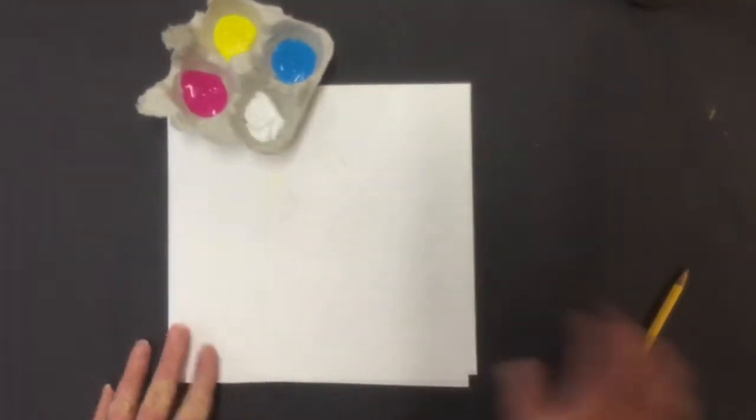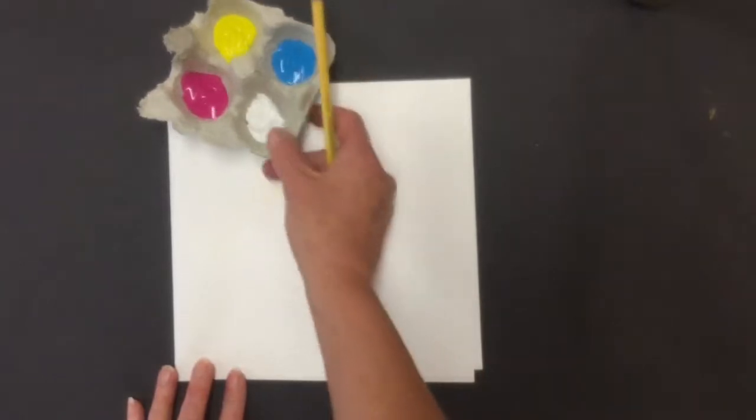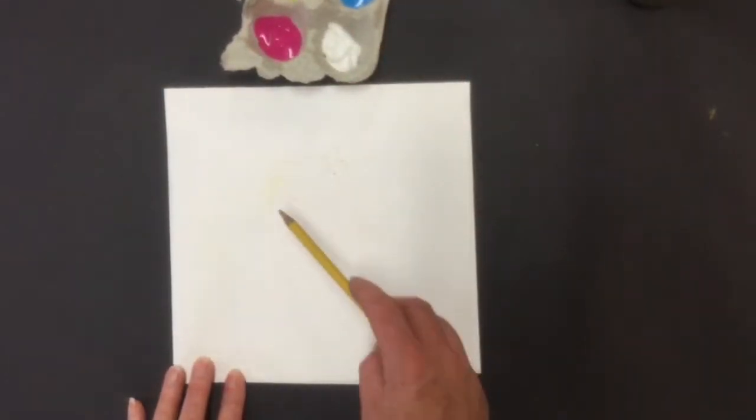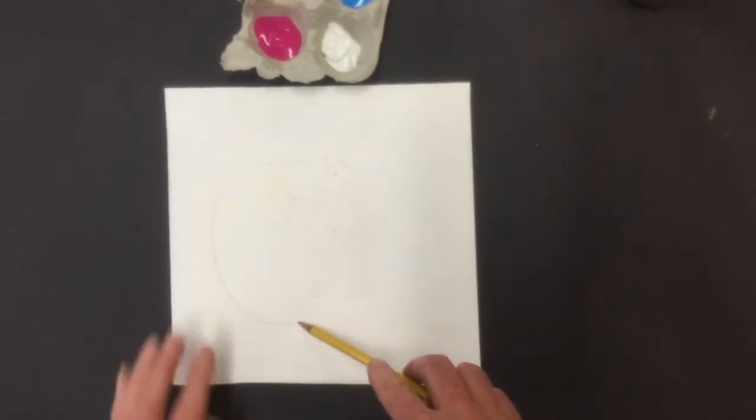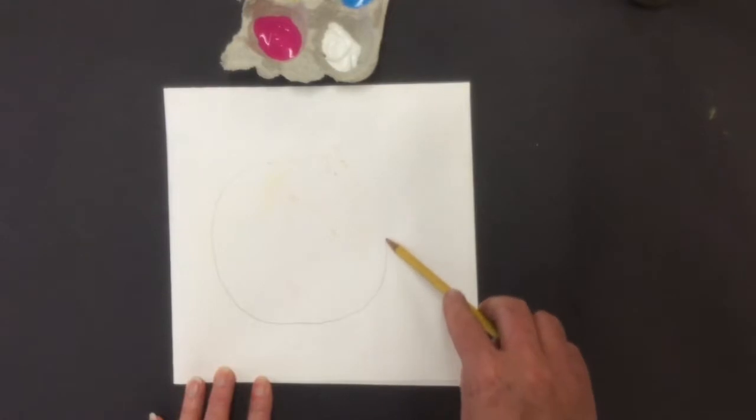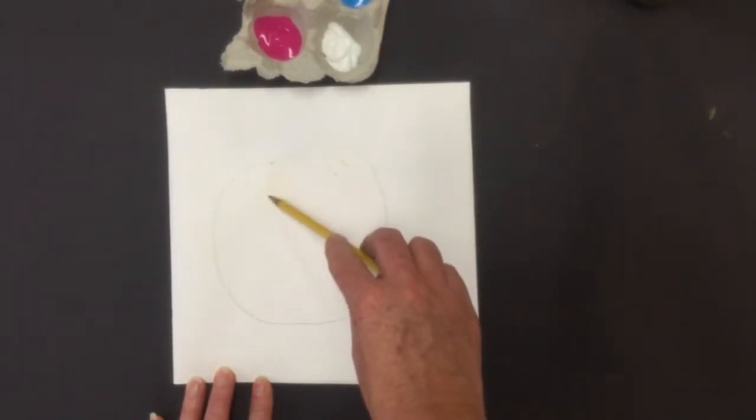So we can start, if you would like, you can start by using a pencil, and you can again draw the contour line for your apple. You want to fill the page. I'm sorry, my apple's over there, and I'm looking at it as I draw it. You want to fill the page with your apple. Make sure that it is an interesting composition.